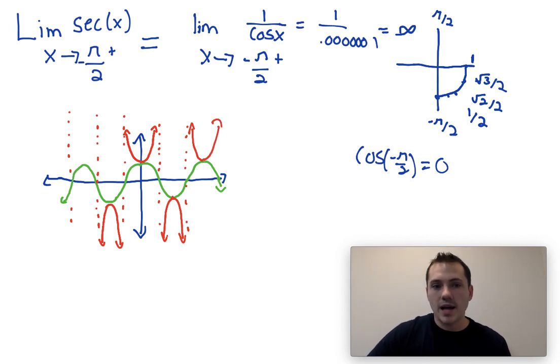If we can remember how to draw the secant graph, we can also see that the limit as x approaches negative π over 2 from the right side is positive infinity. As I'm getting closer and closer to negative π over 2, which is this value right here, my secant curve is trending towards infinity.